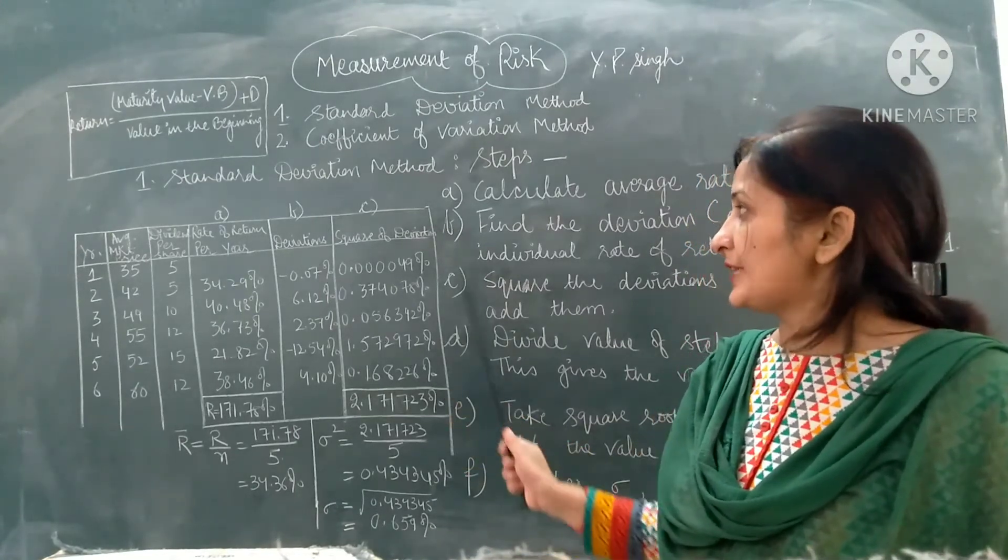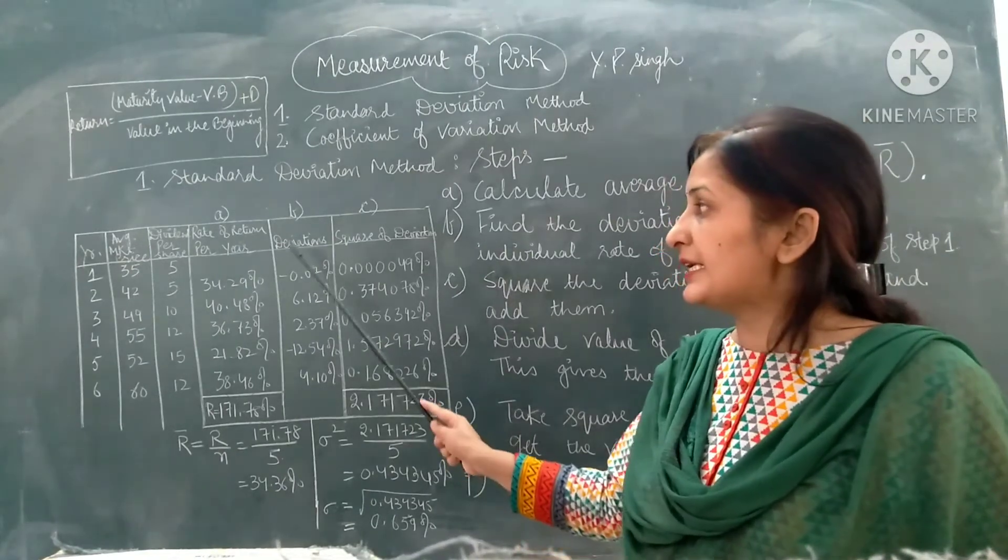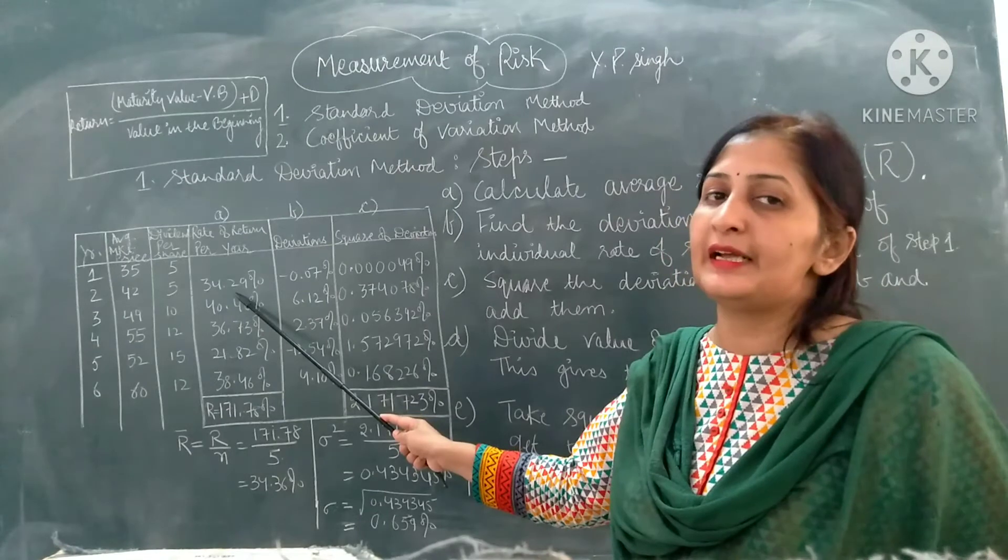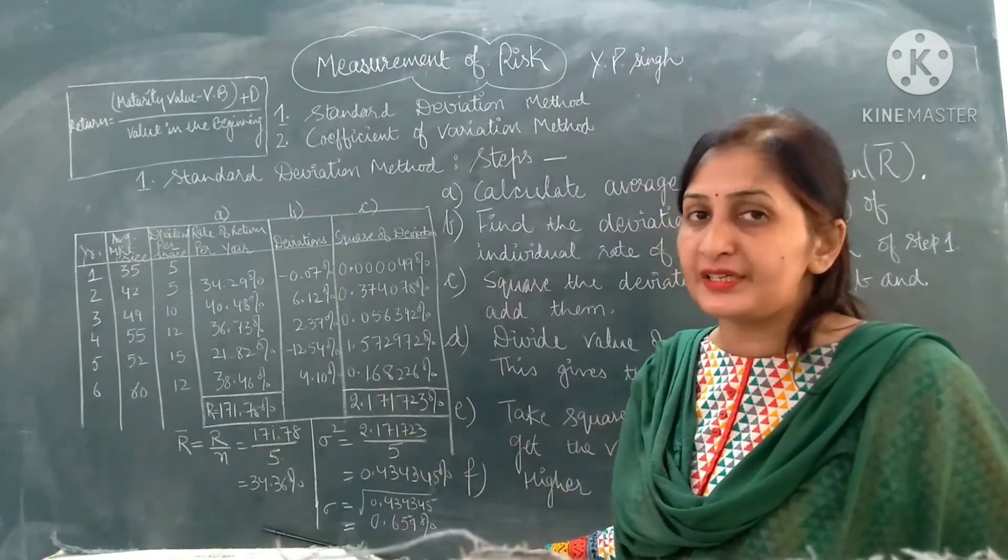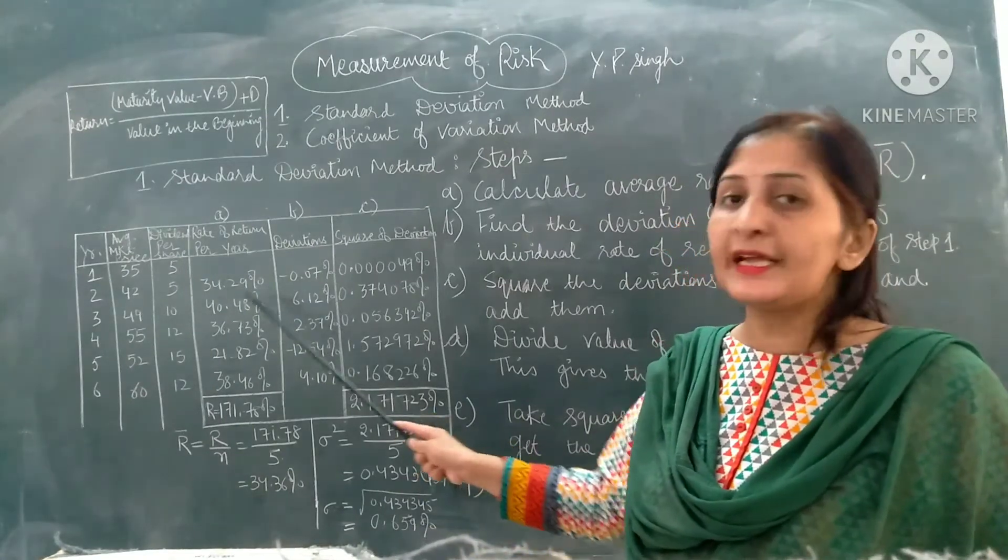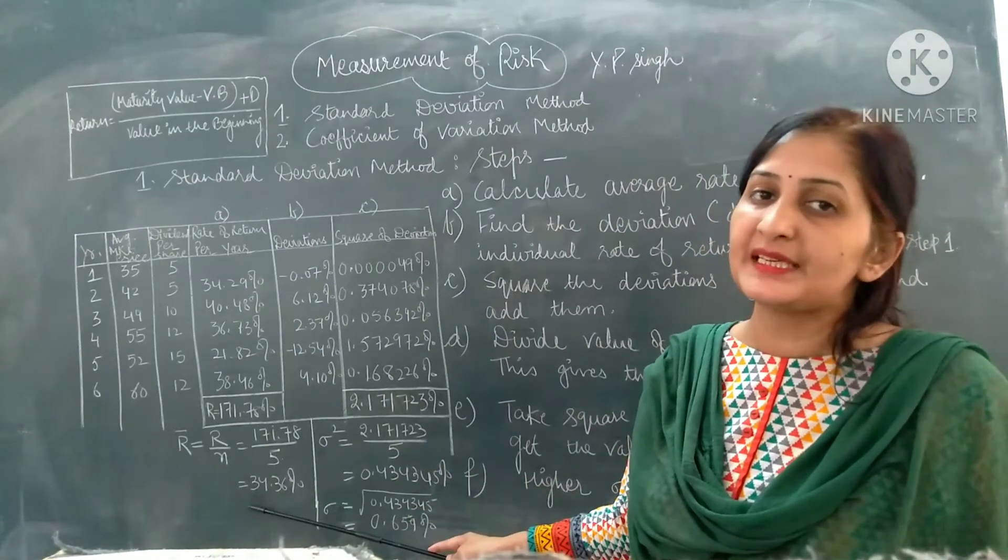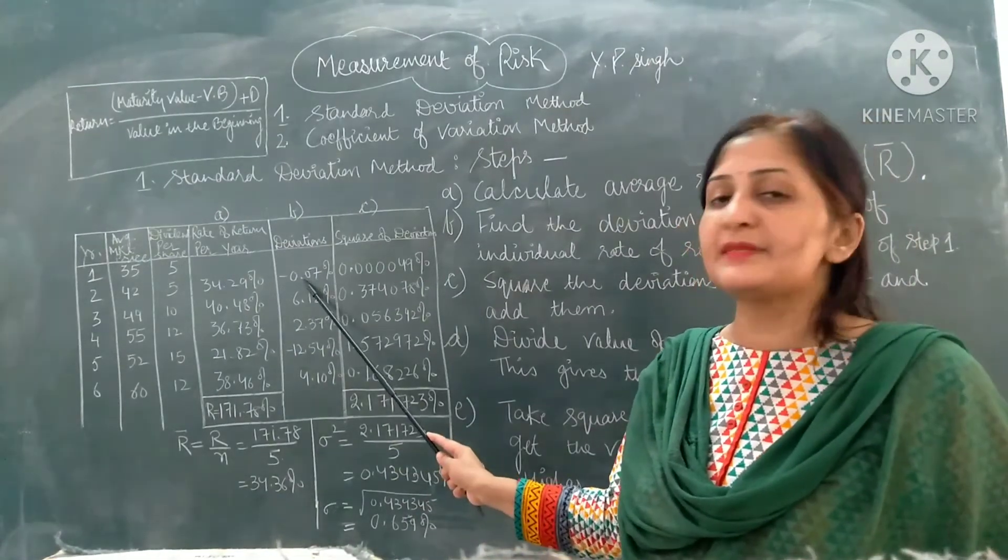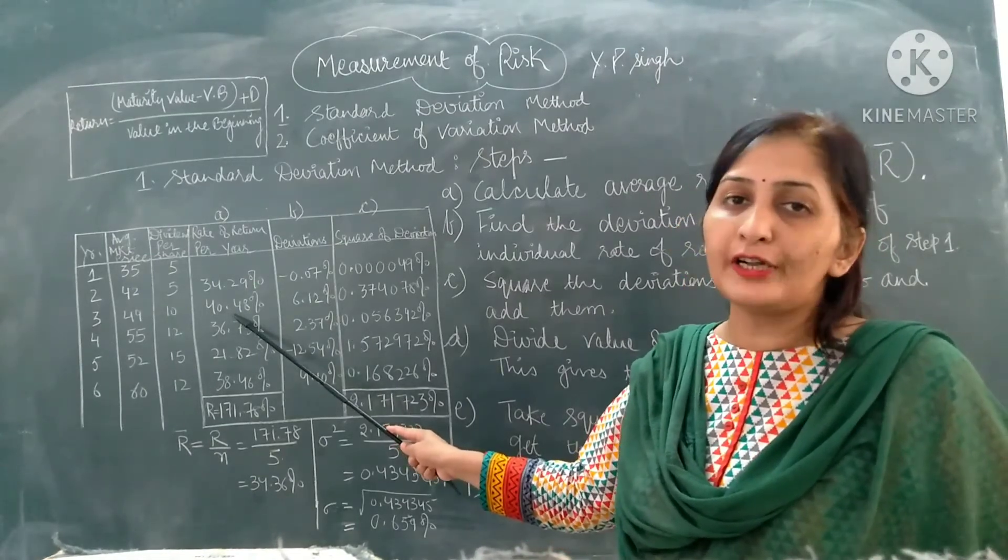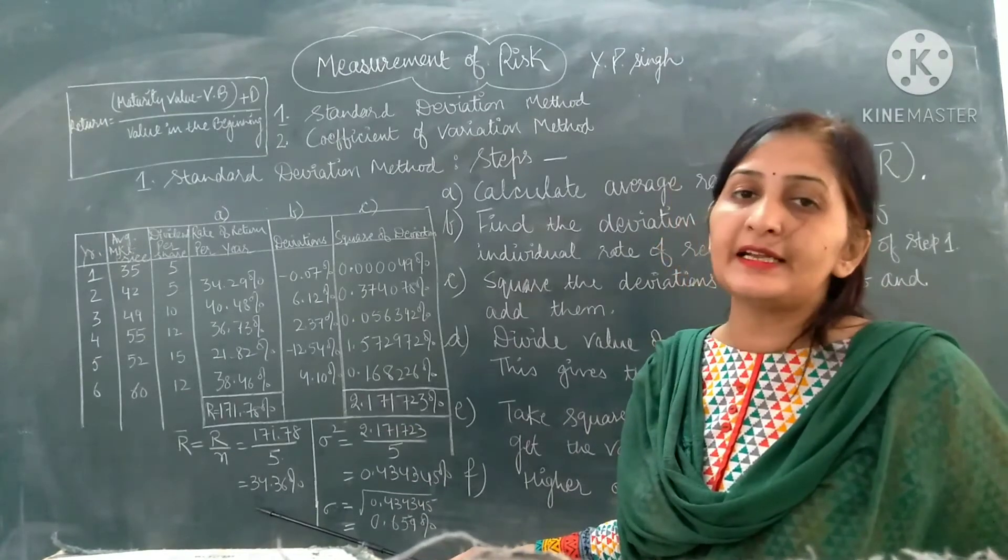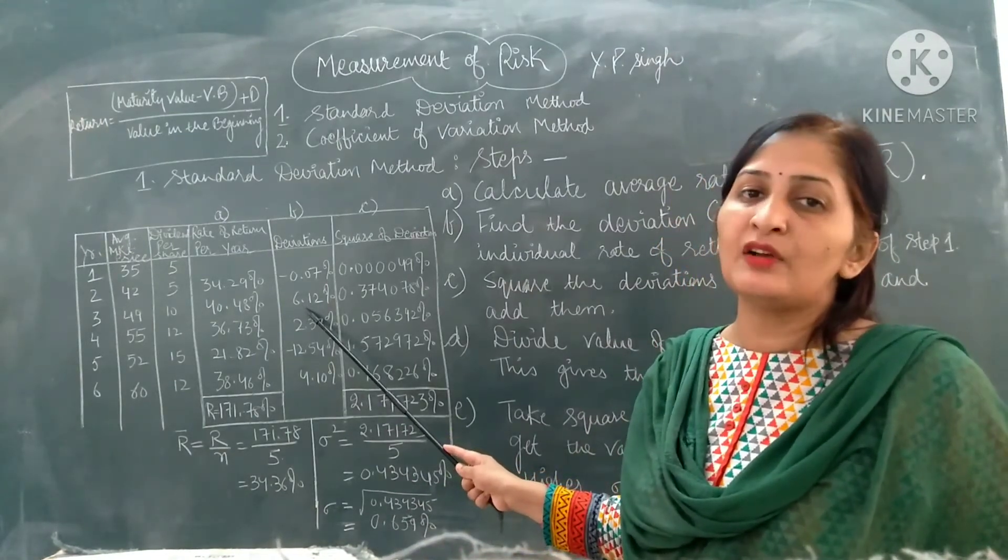Now in step 2, we find the deviation or difference. Our individual return is 34.29 percent minus the average return of 34.36 percent. For the first year, 34.29 minus 34.36 percent gives us minus 0.07 percent. Similarly, for the second year, 40.48 percent minus 34.36 percent gives us 6.12 percent.